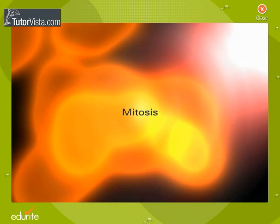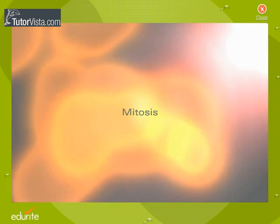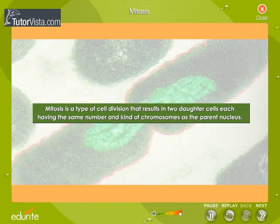Mitosis is a type of cell division that results in two daughter cells, each having the same number and kind of chromosomes as the parent nucleus.